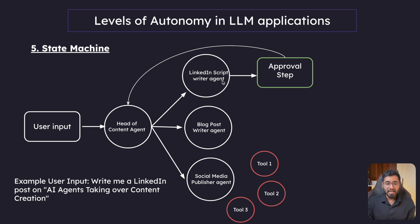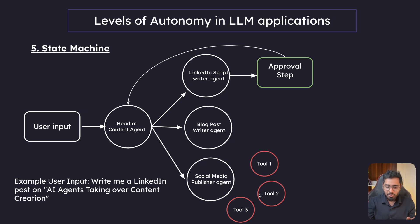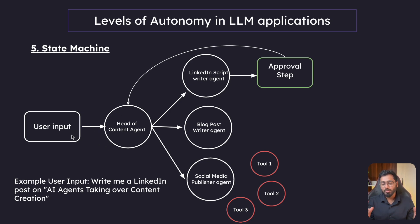Once the human approves a draft, control flows back to the head of content agent, which then looks at the social media publisher agent. This agent can go ahead and post the LinkedIn post to LinkedIn. It has tools — basically special Python functions. For example, one tool could be the Twitter API endpoint to post a tweet, and another could be the LinkedIn endpoint to post content. Depending on the instruction from the head of content agent, it uses the appropriate tool and posts. You can imagine how disruptive this technology could be — the user just speaks to one agent, which delegates to other agents in a hierarchical structure to get the task done.